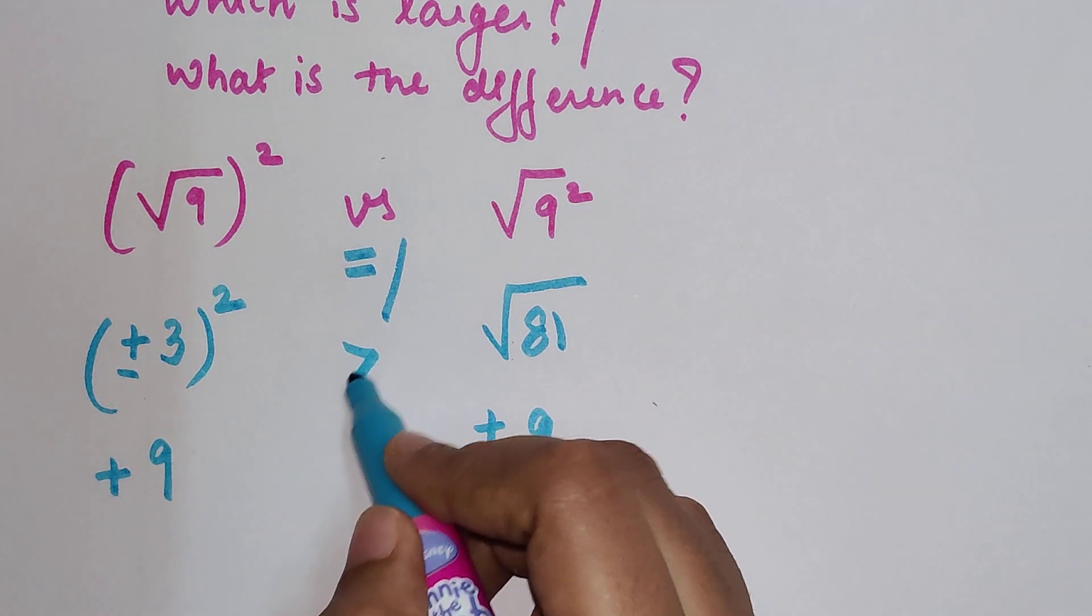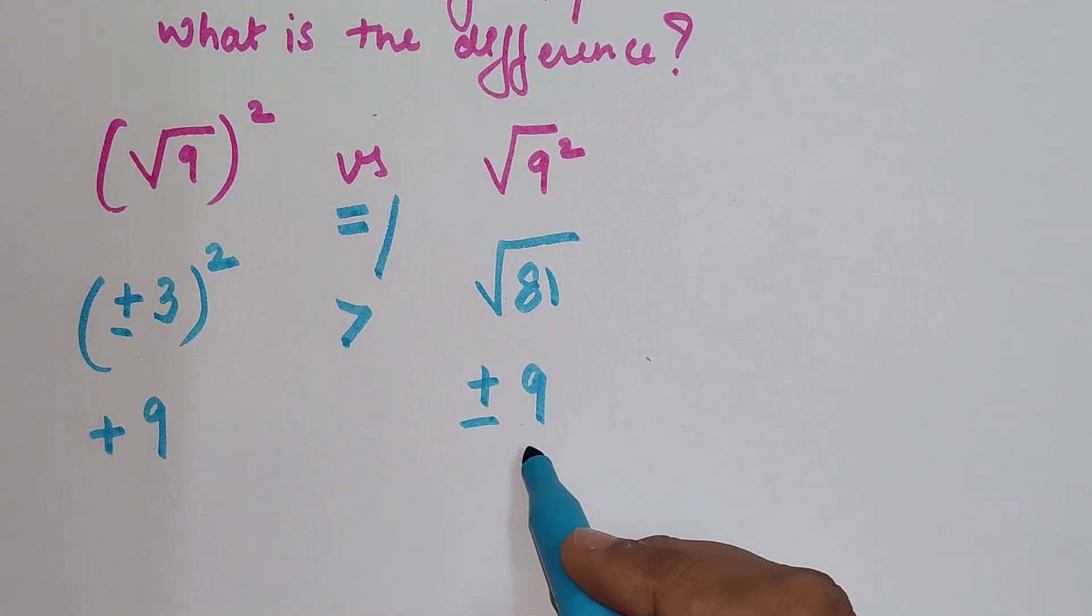So now here we have, we will keep the root as it is and then we have 9 square which is what? 81.